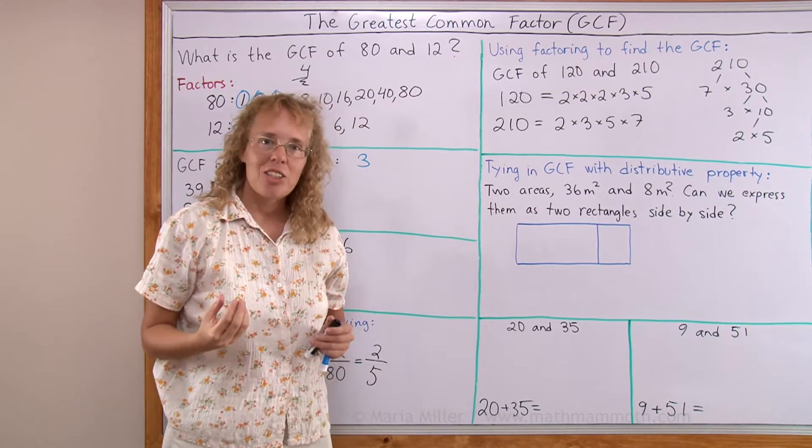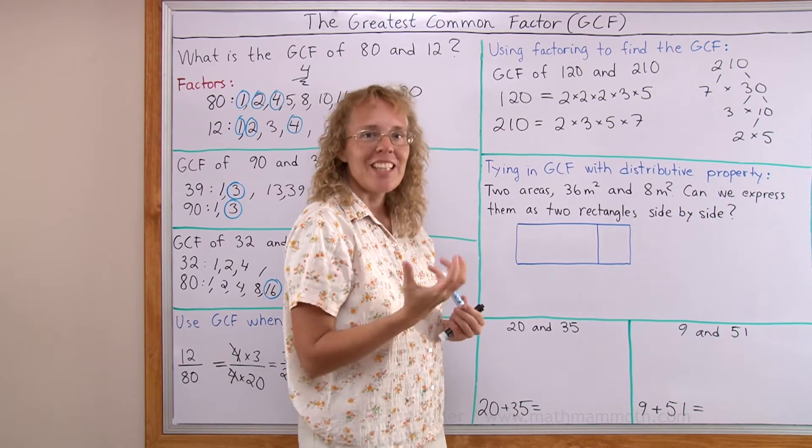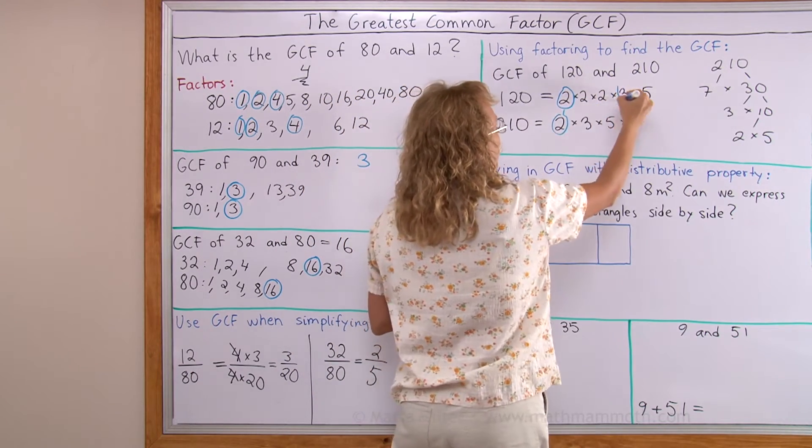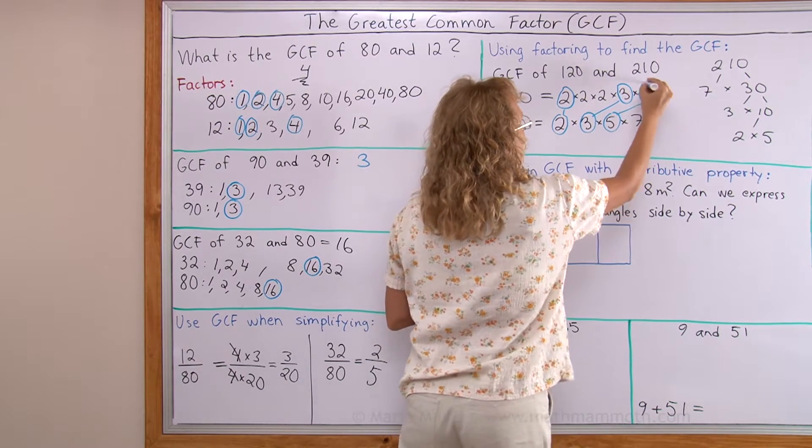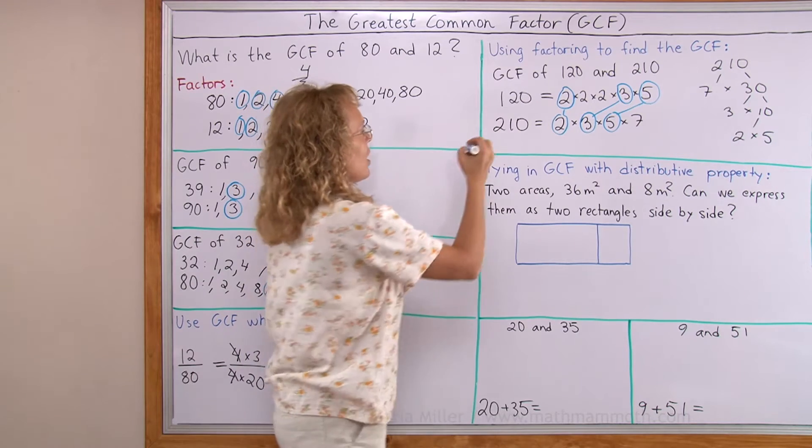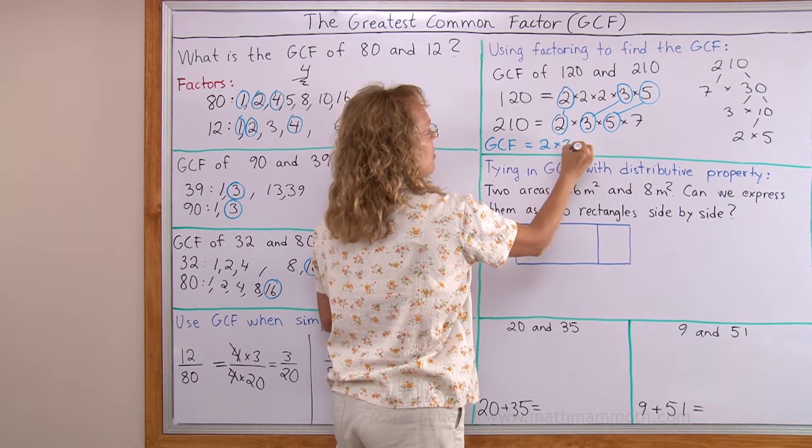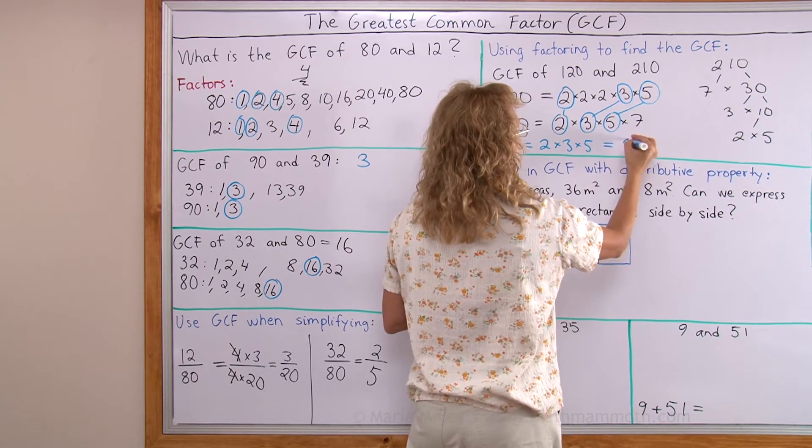And now for the greatest common factor, I will pick anything that is common in these prime factorizations. So there's 2 and 2 that are common, 3 and 3 are common and 5 and 5 are common. So the GCF is 2 times 3 times 5, whatever was common in both, which is 30.